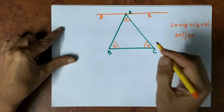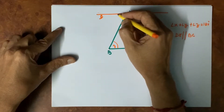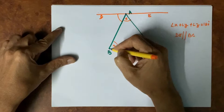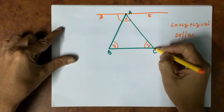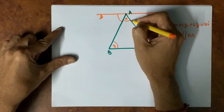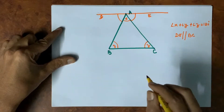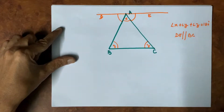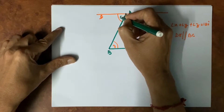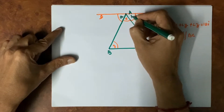Now, one angle is formed: angle BAD, and another is angle CAE. Let us name these angles also — this is angle A and this is angle B.